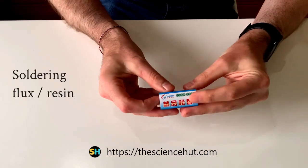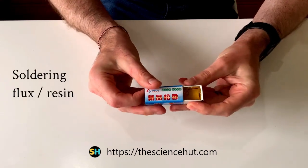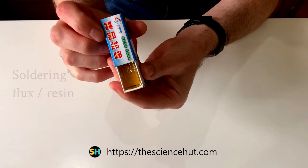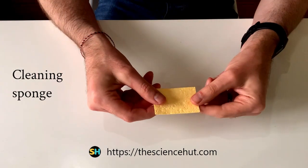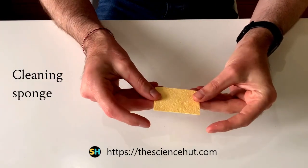Some soldering resin. This reduces surface tension and can make molten solder easier to work with and also helps to minimize oxidation. Heat-resistant sponge or gauze for cleaning your soldering iron tip.